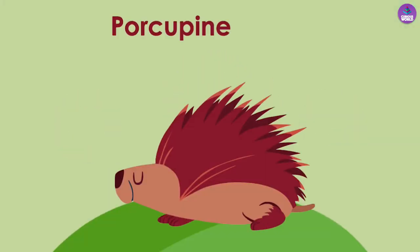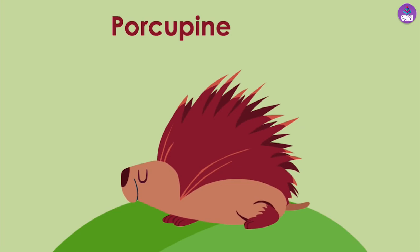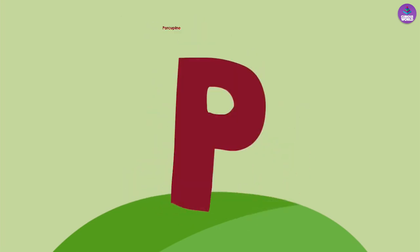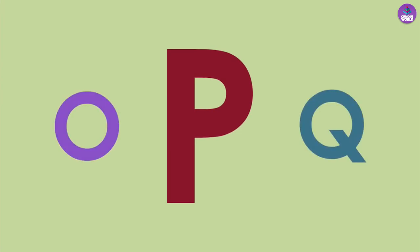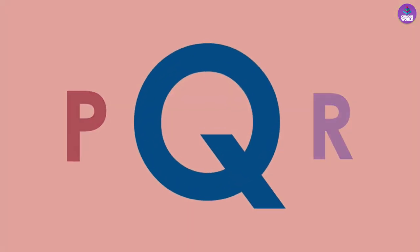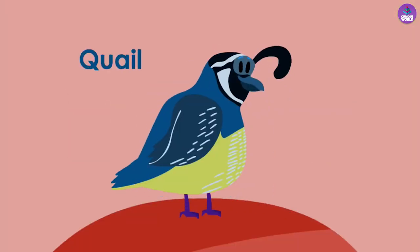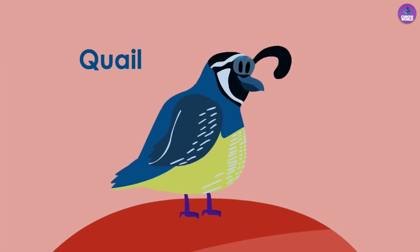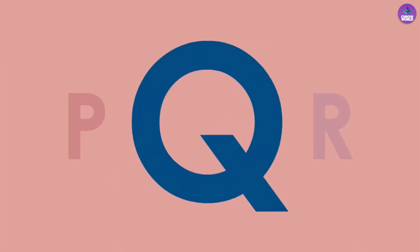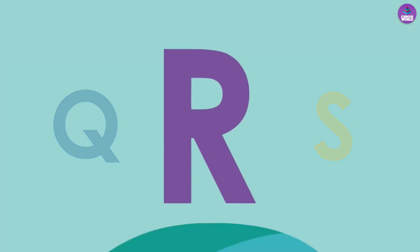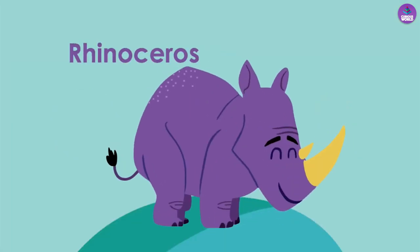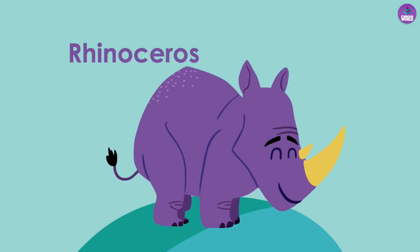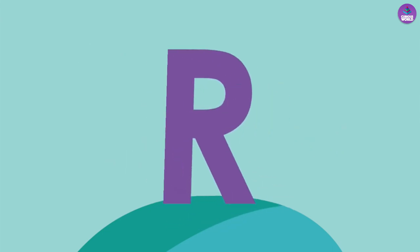P is for porcupine. P. Q is for quail. Q. R is for rhinoceros. R.